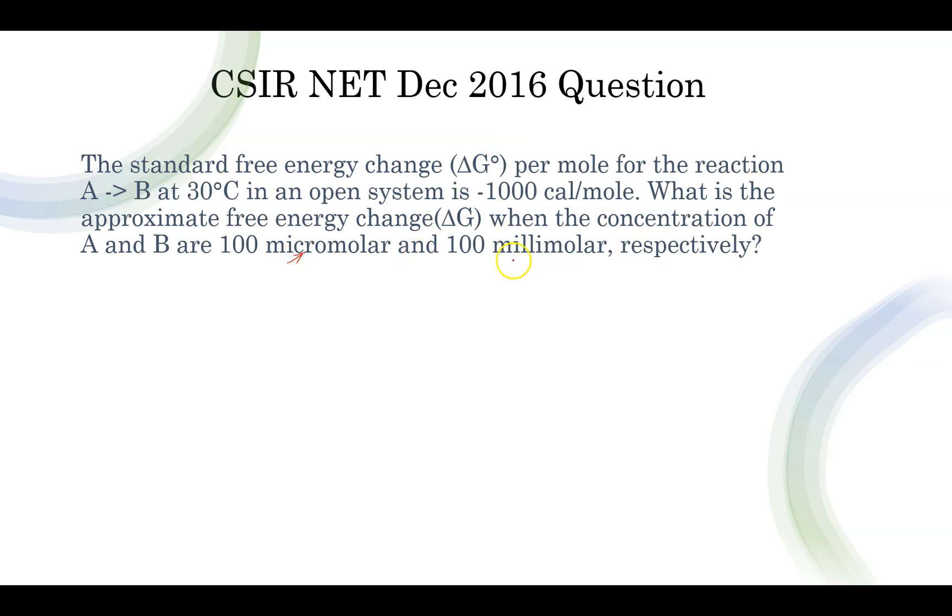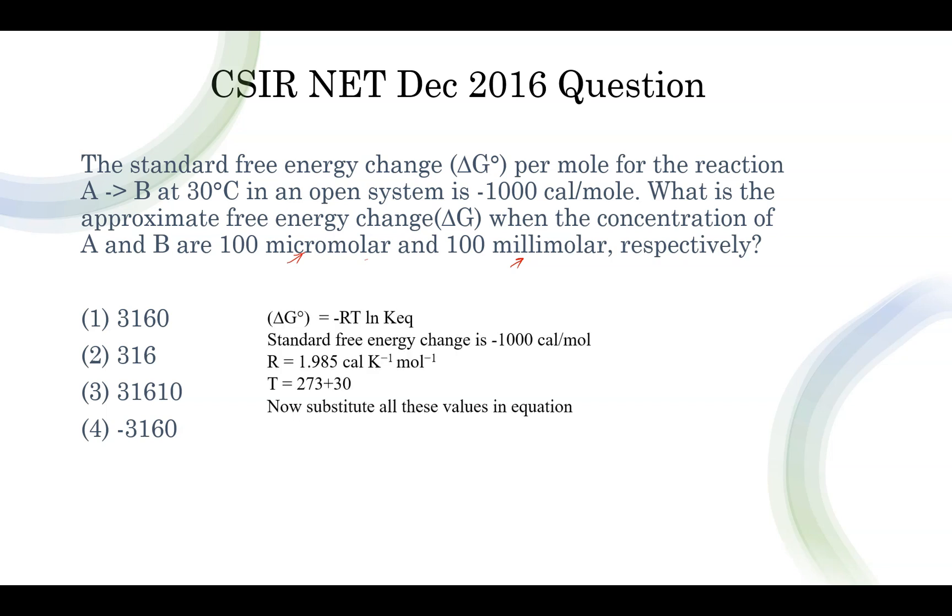Micromolar this is and this is millimolar. So you have to convert it into molar for putting into the equation. These are your options. So how are you going to solve this question? First thing is you are supposed to write down what are the given things. Here ΔG° is given as -1000 cal/mol. Nothing to change in here.